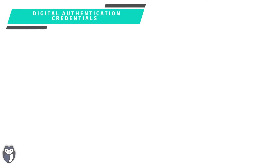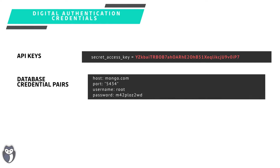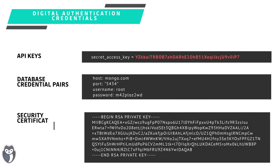Secrets refer to digital authentication credentials when we're talking about them in software language. What are digital authentication credentials? Well, these are typically things like API keys, credential pairs, security certificates, encryption keys — really anything that authenticates us with a different system or service or allows us to ingest or read data.